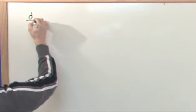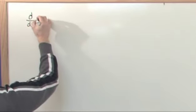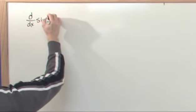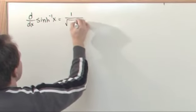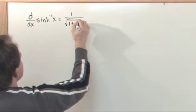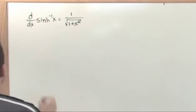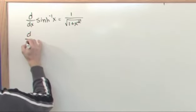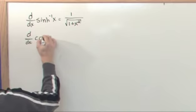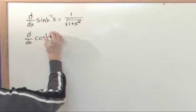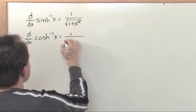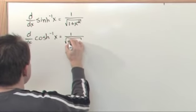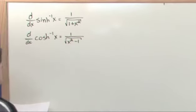The derivative of the inverse hyperbolic sine is equal to 1 over square root 1 plus x squared. The derivative of inverse cosine hyperbolic is 1 over square root x squared minus 1.